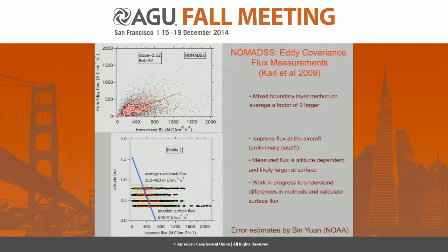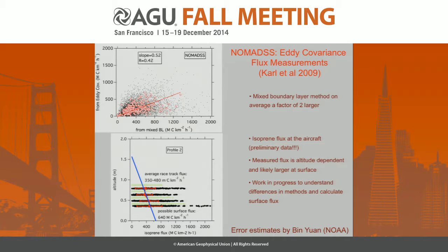Here is the quantitative comparison of the two measurement methods of determining fluxes. The mixed boundary layer method versus the eddy covariance flux measurements: on average the eddy covariance fluxes are somewhat lower. It should be noted that these fluxes are calculated at the aircraft height, and as shown in the altitude profile, the measured fluxes are lower the higher you go in the boundary layer. At this point all those data are very preliminary and we're working on determining the surface fluxes and understanding better why and where the two methods disagree.